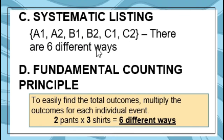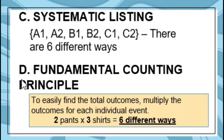Our third method is systematic listing. With A, B, C as shirts and 1, 2 as pants, the outcomes are listed in an organized way: A1, A2, B1, B2, C1, C2 — ensuring none are missed. There are six different ways. The fourth method is the fundamental counting principle: to find total outcomes, multiply the outcomes for each individual event — 2 pants times 3 shirts equals 6 different ways.